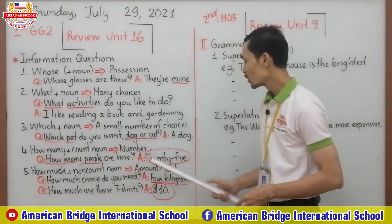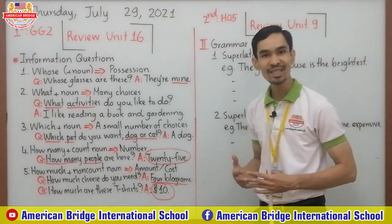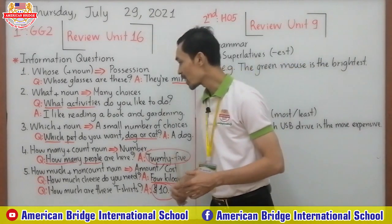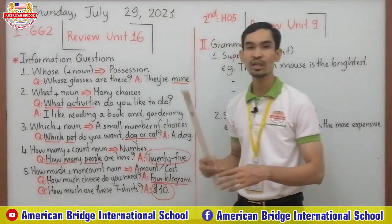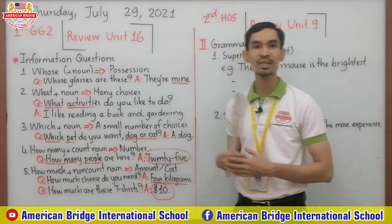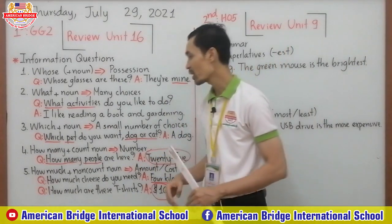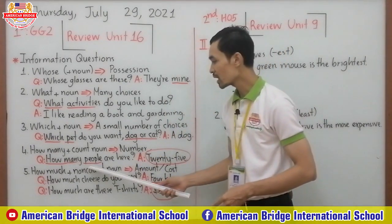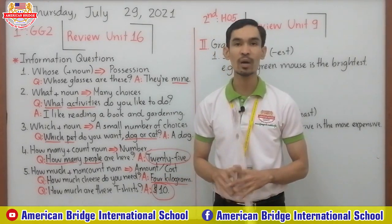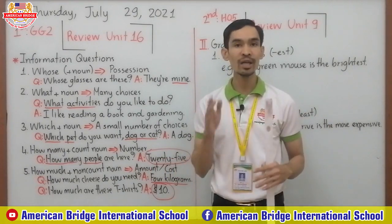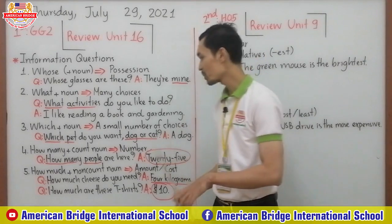'How many people are here?' — '25.' So 25 is the number. When you use how many plus plural noun, you answer with a number. Remember, you cannot use how many with a singular noun — only plural noun.